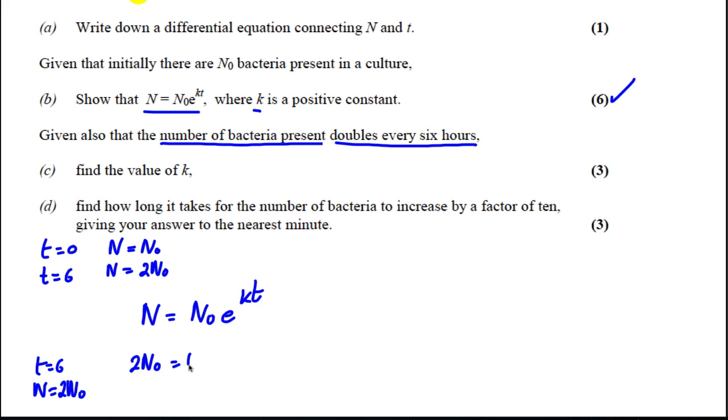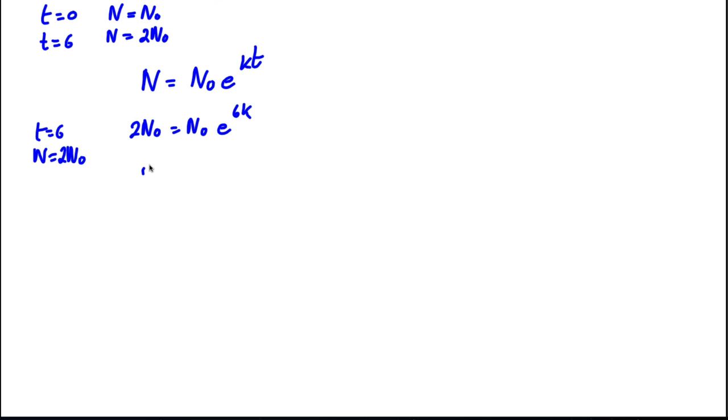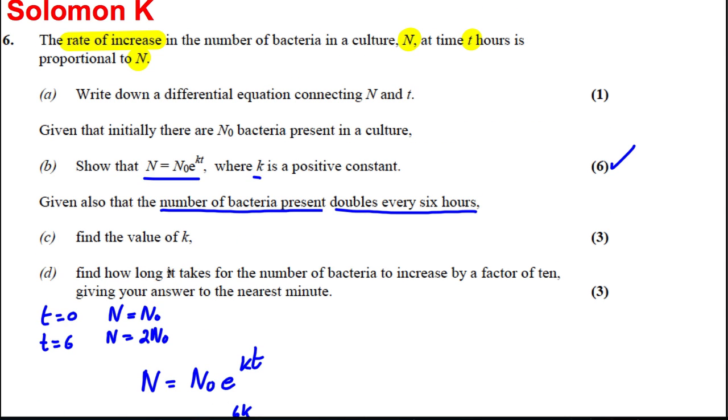2N₀ equals N₀e^(6K). Divide both sides by N₀. So I would get that 2 is equal to e^(6K). Take lns of both sides. ln 2 is equal to 6K. And therefore, K is equal to 1 sixth ln 2. And it asks us in the question to find the value of K, and we found the value of K. There's no point at writing it in a decimal notation. Keep it as 1/6 ln 2.